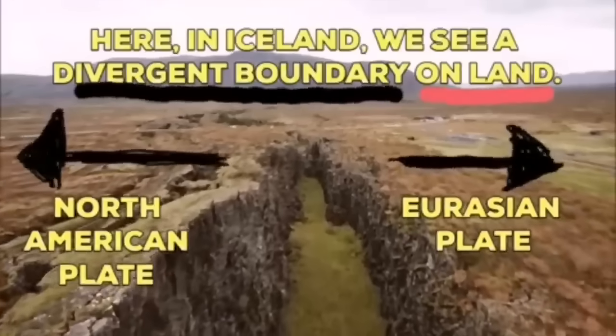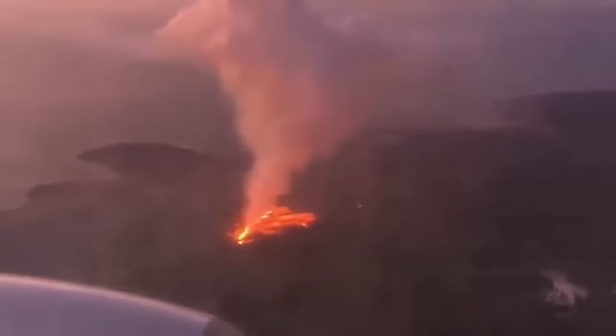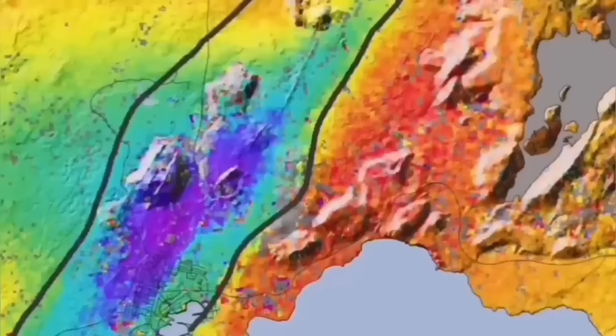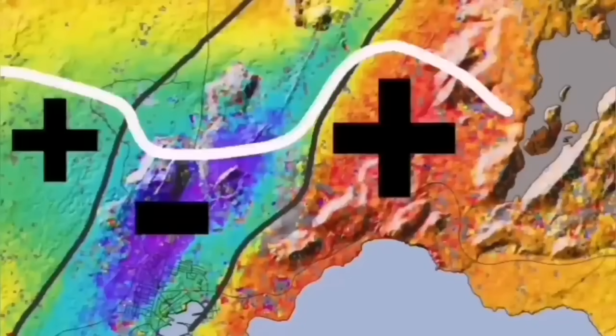Eurasian plate and North American plate, through these grabens, this is the hollow that you see in the middle, are separating. And through them, the magma forms and rises and creates lava eruption of the volcano, this is what we call it.